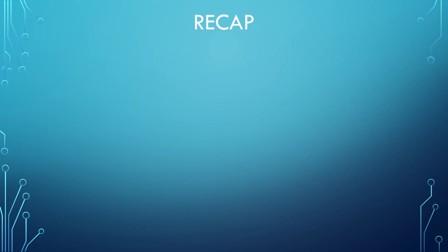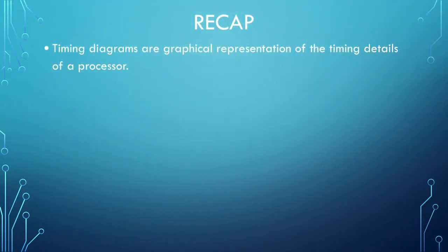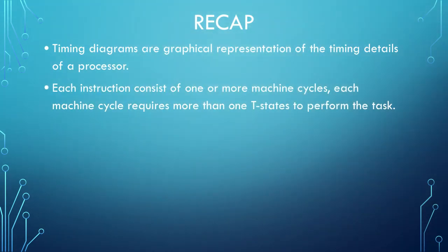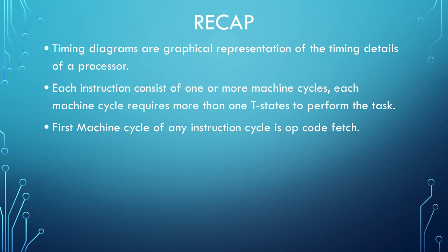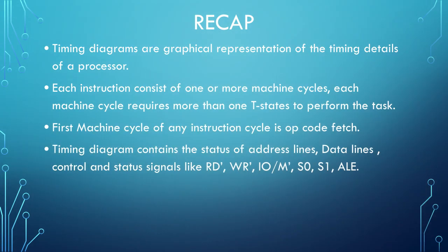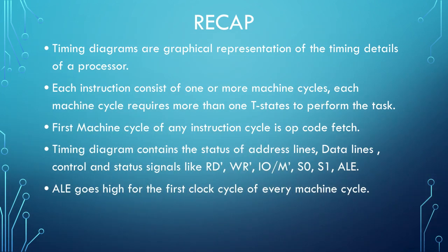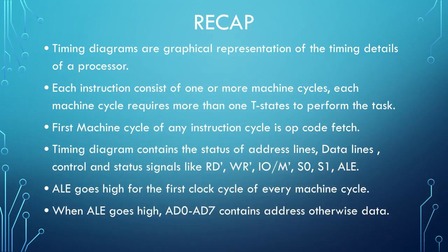We will have a quick recap of what we have seen in this slideshow. Timing diagram is a graphical representation of timing details. Each instruction cycle consists of one or more machine cycles, and machine cycle consists of one or more T states. The first machine cycle is always opcode fetch for every instruction. Timing diagram contains the status of address lines, data lines, control and status signals for all the instructions. ALE goes high for the first clock cycle of a machine cycle, and when ALE is high the address-data bus contains address; otherwise it contains data.